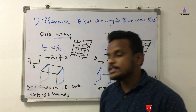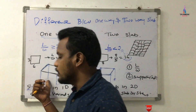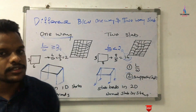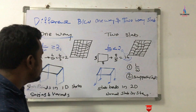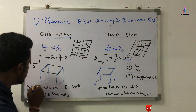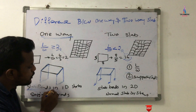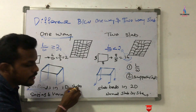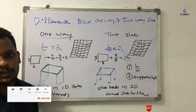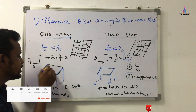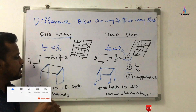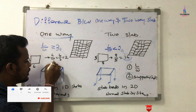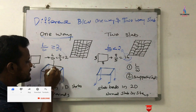Due to the presence of opposite-direction supporting members, the load distribution takes place towards the shorter span. If any loading condition is applied on the one-way slab system, the slab will bend in that shorter-span direction.